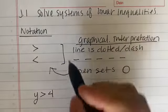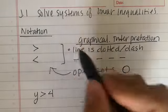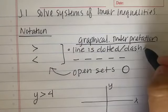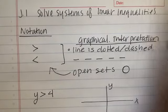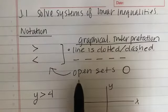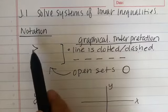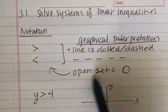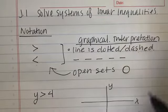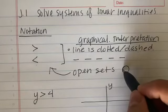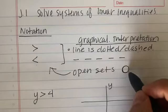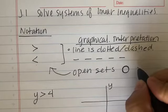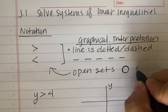The first thing you need to know is that the line is dotted or dashed. Whenever we have an inequality with these two symbols, we know that they're open sets and we use an open dot at a given point.